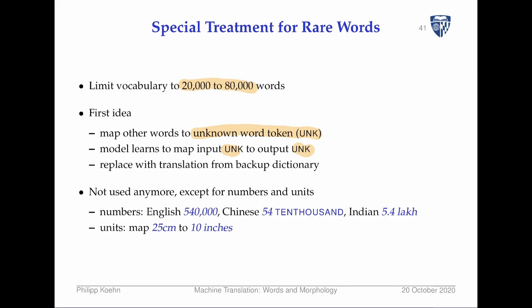Numbers and units may benefit from special pre-processing. For example, '540,000' in English might be written '54万' in Chinese or '5.4 lakh' in India. Learning this automatically is tricky since each number requires different computation. Similarly, '25 centimeters' might need to be converted to '10 inches' for different regional contexts.